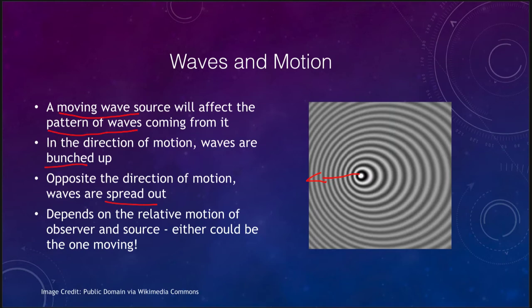So depending on the motion, the wavelengths can actually be changing. This depends on the relative motion — it does not matter whether it is the observer or the source doing the moving. You could be moving closer to an object making a sound, causing a Doppler effect, or that object could be moving towards you. The effect we see would be exactly the same.